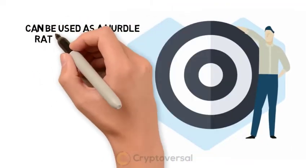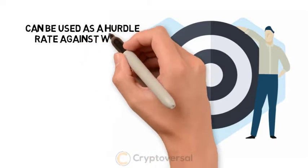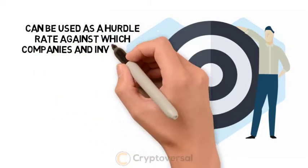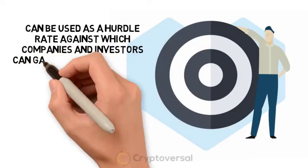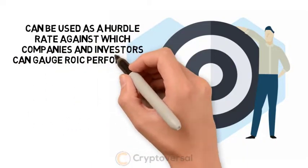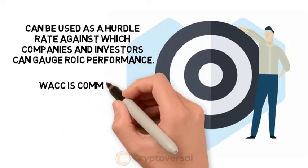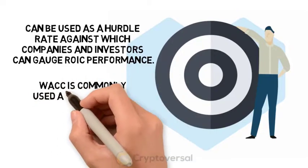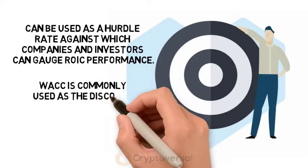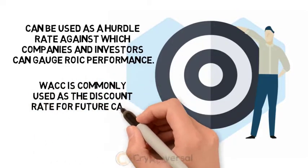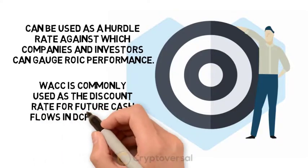WACC can be used as a hurdle rate against which companies and investors can gauge ROIC performance. It is also commonly used as the discount rate for future cash flows in DCF analyses.